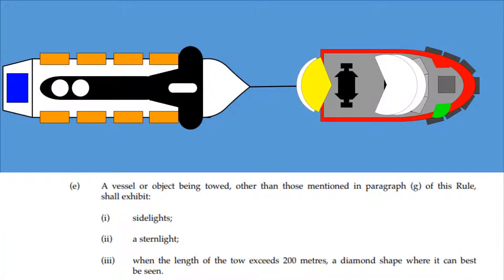A vessel or object being towed, other than those mentioned in paragraph G of this rule, shall exhibit sidelights, a stern light. When the length of the tow exceeds 200 meters, a diamond shape where it can best be seen.